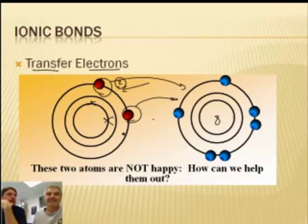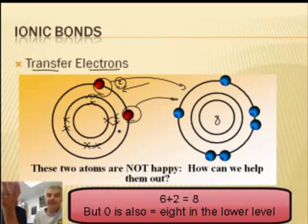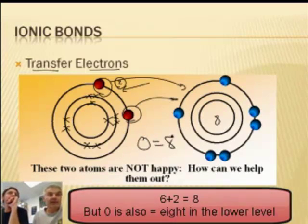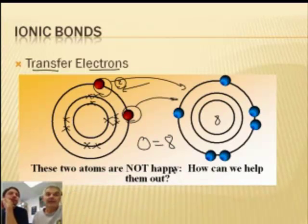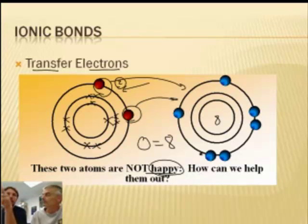Well, it's because the lower level hasn't been drawn, but there would be eight electrons in that previous level. So zero is equal to eight — zero equals eight in the atomic world. These atoms want to be stable — stable meaning eight valence electrons. So if the one on the left gives its two to the one on the right, two minus two equals zero, and zero equals eight.